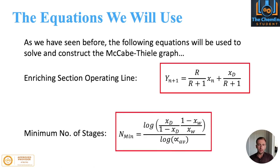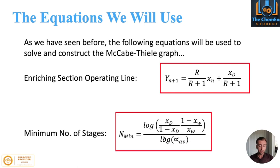One of the powers of the McCabe-Thiel method is it allows us to determine graphically the theoretical number of stages required to achieve the desired concentrations at the top and bottom products. You can also use a logarithmic equation — a ratio between the top and bottom product compositions divided by the logarithm of the average relative volatility — to determine the theoretical minimal number of stages and validate your chart.